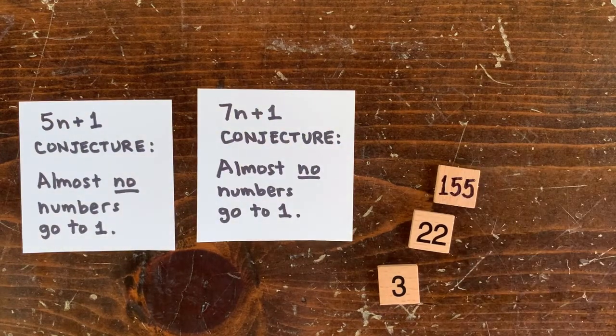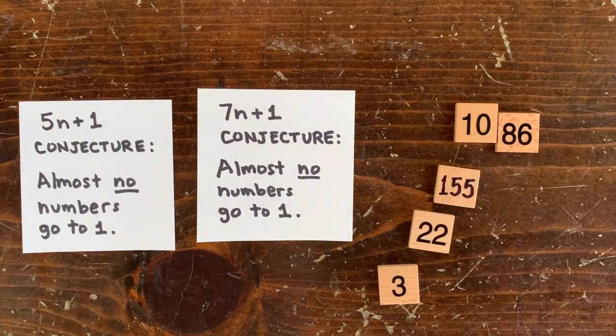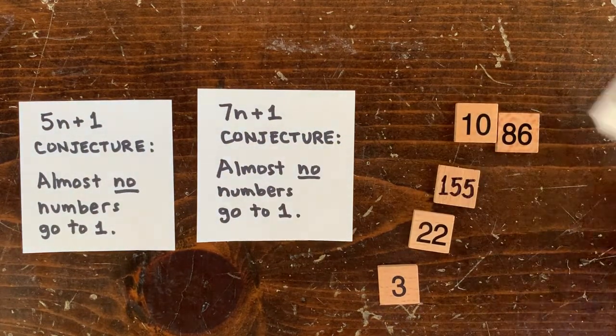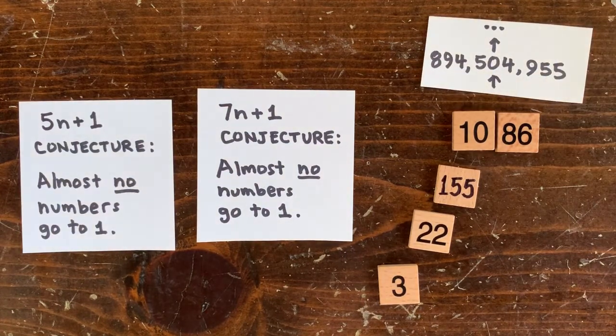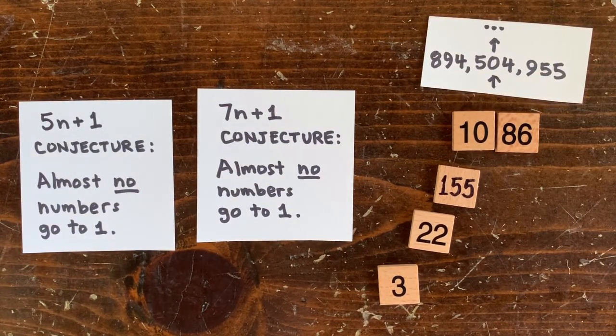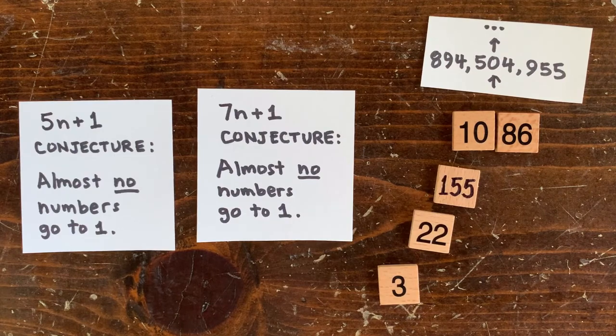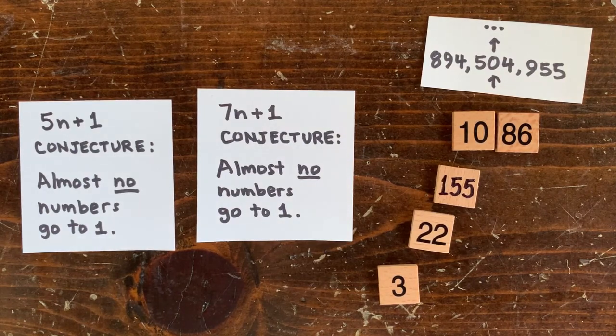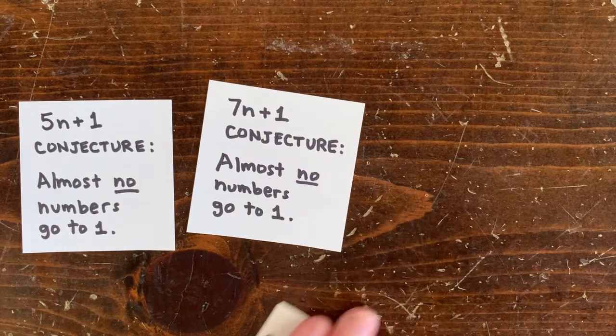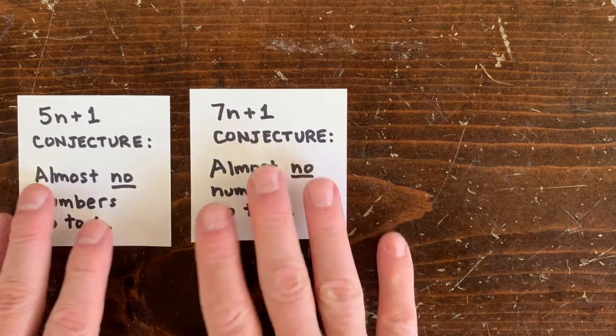But we can't prove any of that. Even the simplest thing, like 3 goes to 22, 155, 1086, 894 million, and so on. It just keeps going and going as far as anyone's cared to track it. But who knows, maybe it hits some giant power of 2 and comes crashing back to 1.